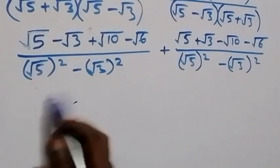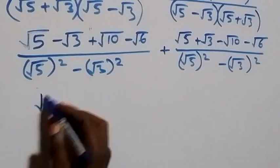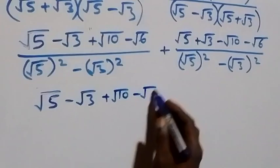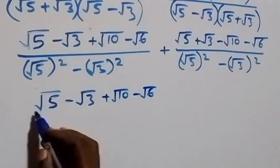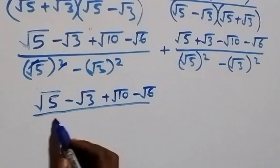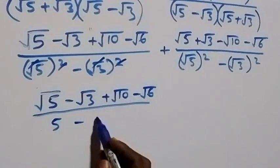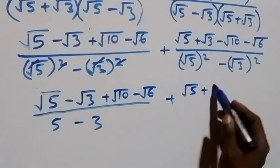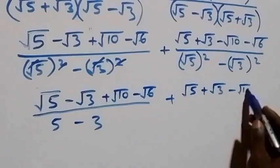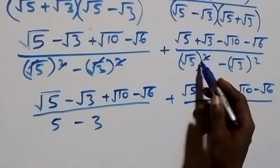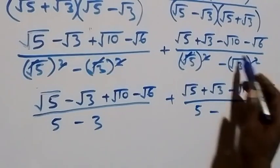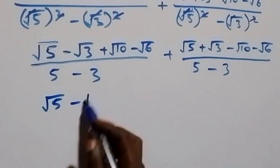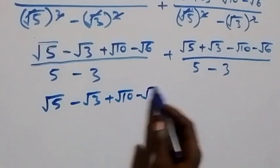After simplification, the first numerator becomes √5 − √3 + √10 − √6, divided by 5 − 3. The second numerator simplifies to √5 + √3 − √10 − √6, also divided by 5 − 3.